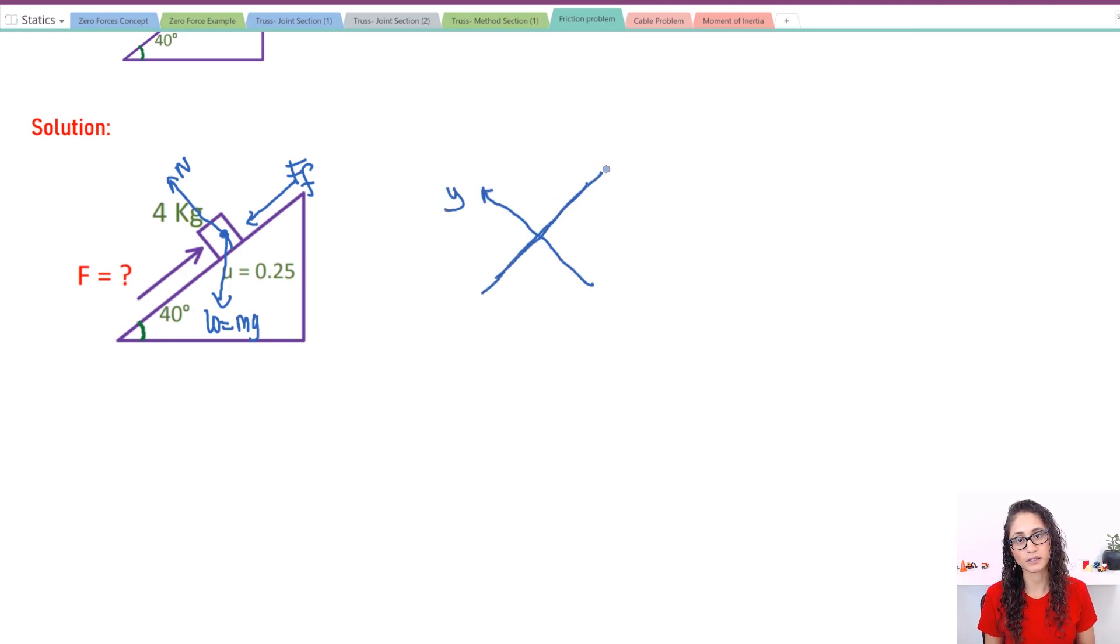So this is my Y, this is my X axis. Let's draw the forces in a different color. Let's do red. So here I have mg going down and the weight. Another thing is here I have 40 degrees, right? So this is going to be 40. That's 40.